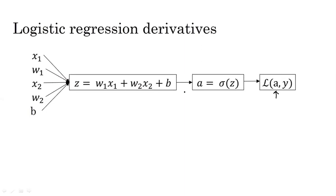To find the gradient, we first find the gradient with respect to the intermediate variable a. The gradient of the final loss function with respect to intermediate variable a can be represented as dA, which is basically equal to the derivative of our final loss function L of a comma y with respect to dA.